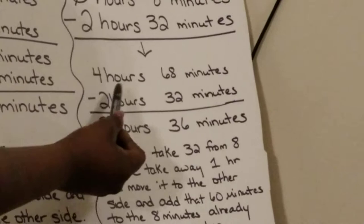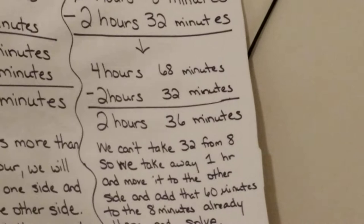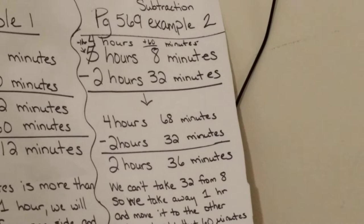Just remember when you're looking at these, we do not say 32 minus 8. We can't take 32 from 8. So we take away 1 hour and move it to the other side and add that 60 minutes to the 8 minutes already there and solve. Make sure when you're doing these problems you are very careful to make sure you're checking your answers, checking your numbers, making sure you're not skipping steps or combining steps.